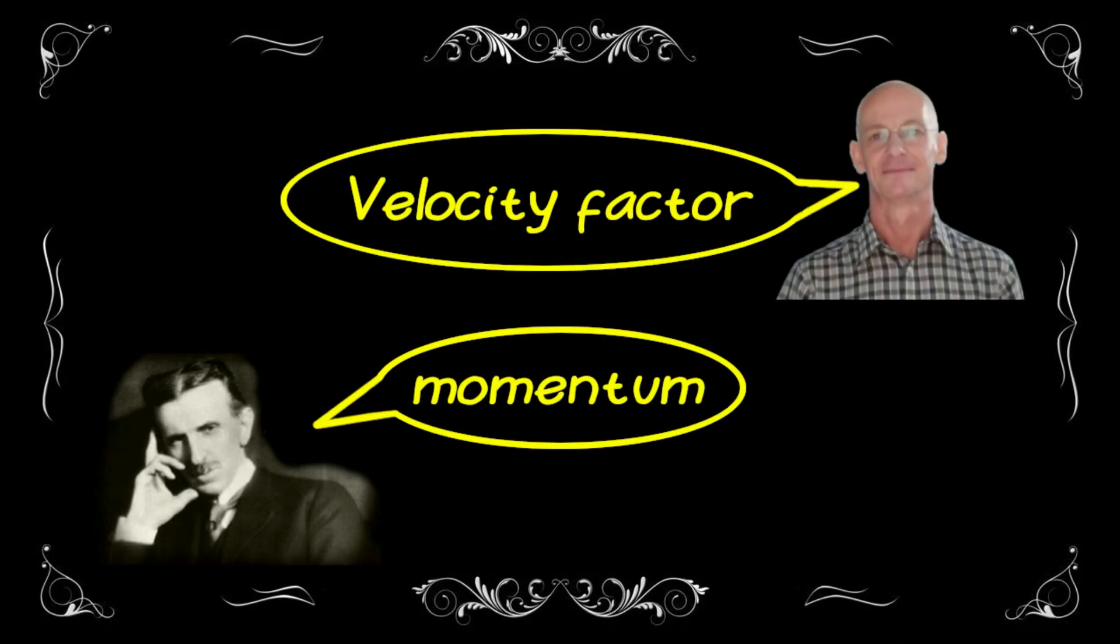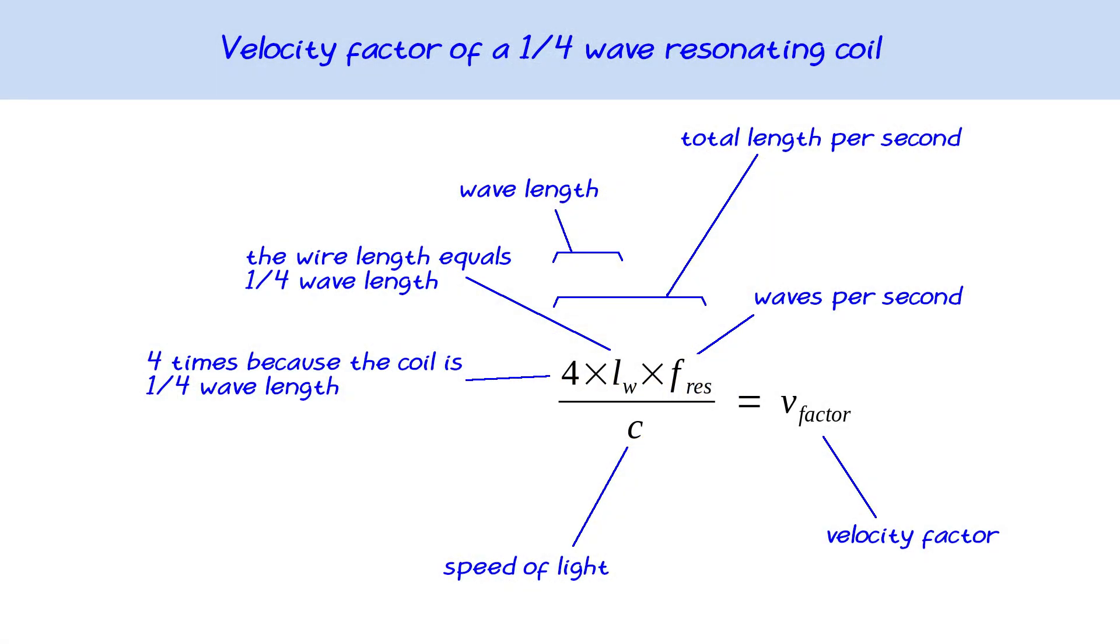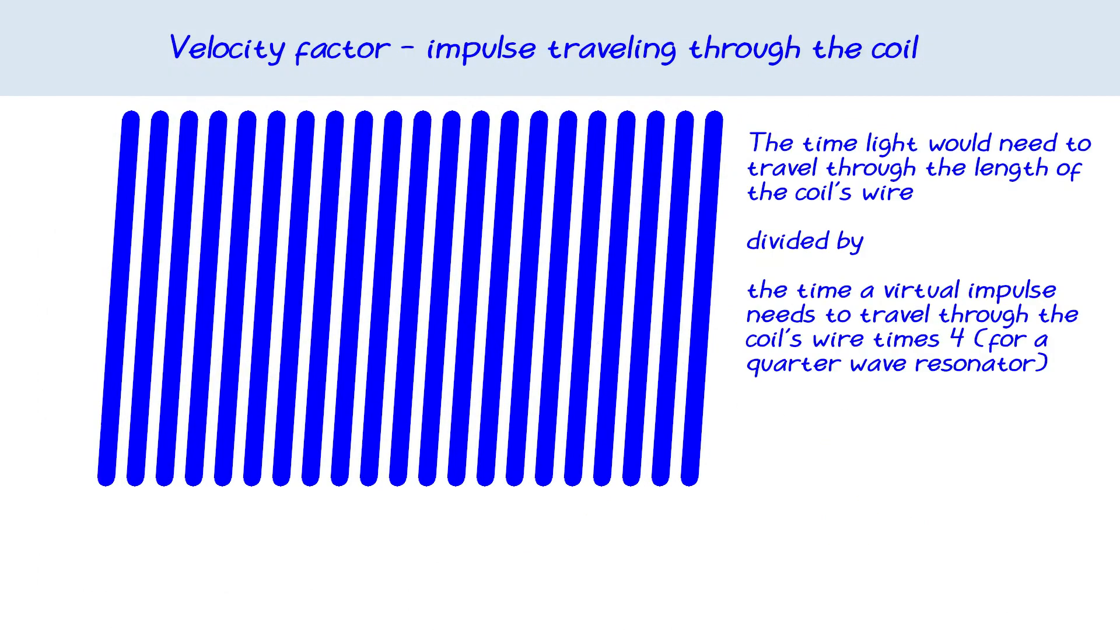Before we do though, I have to talk about the velocity factor of a coil. Here is how we calculate the velocity factor. If the velocity factor is 1, then a virtual impulse is traveling through the coil at the speed of light. If the velocity factor is smaller, then this impulse travels slower, and if it's higher, it travels faster.